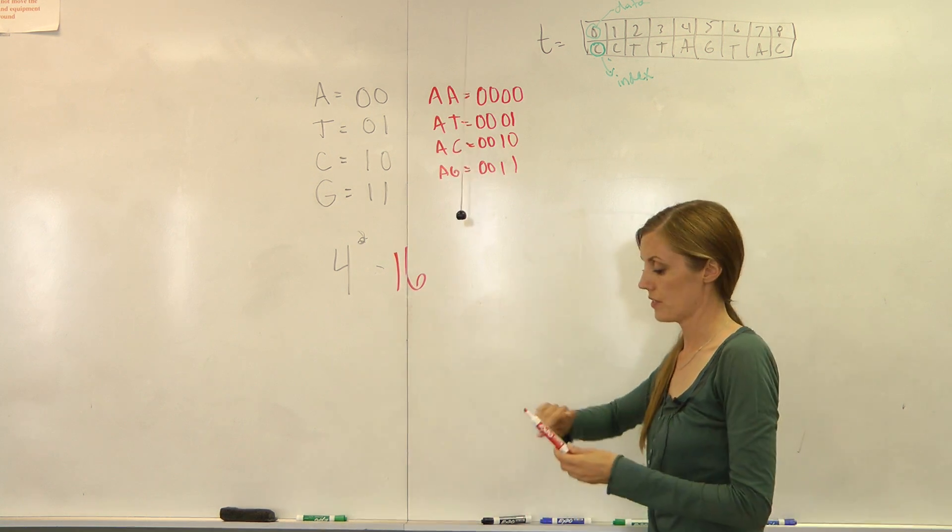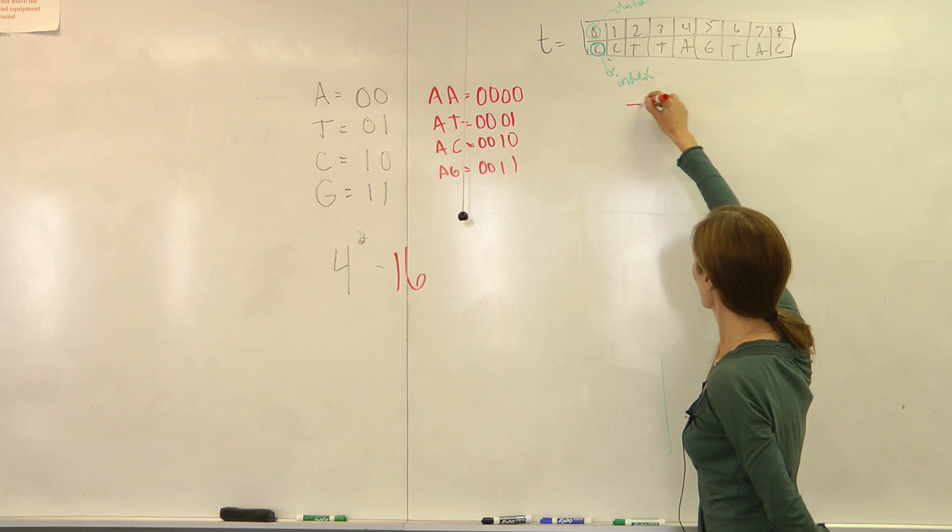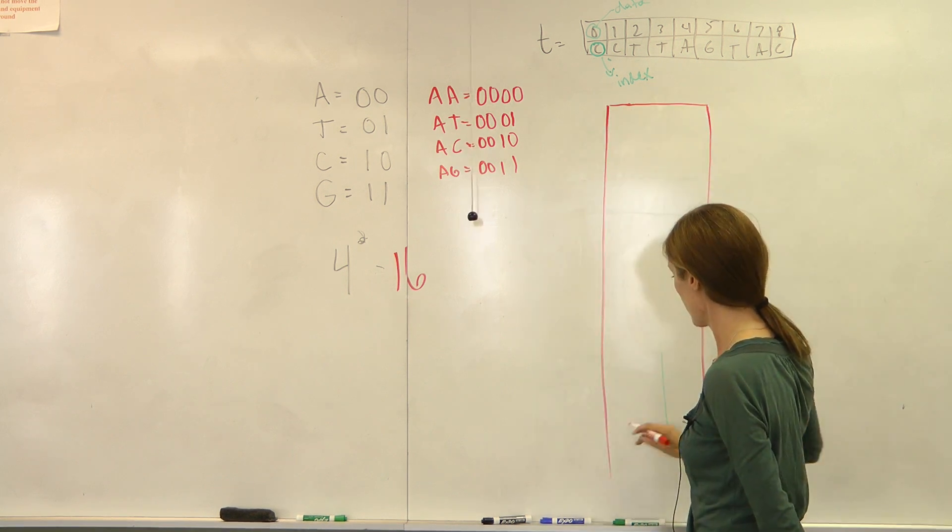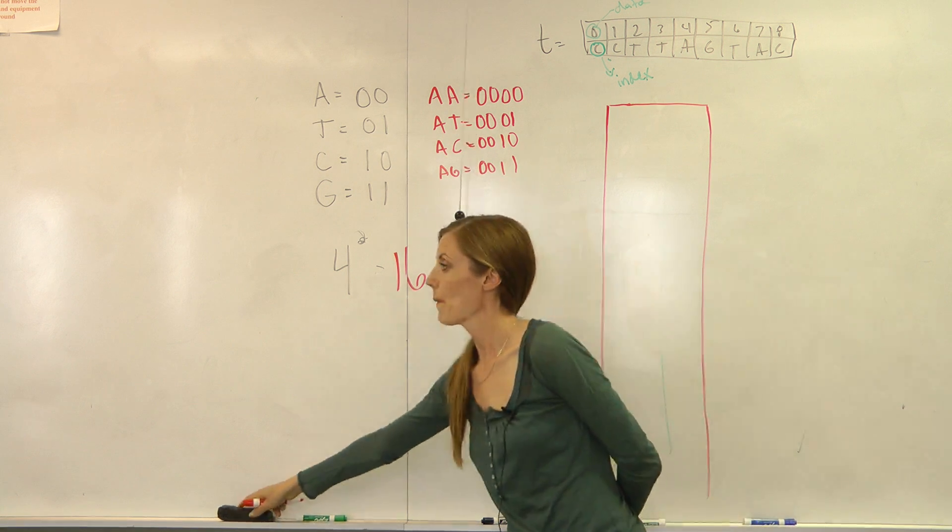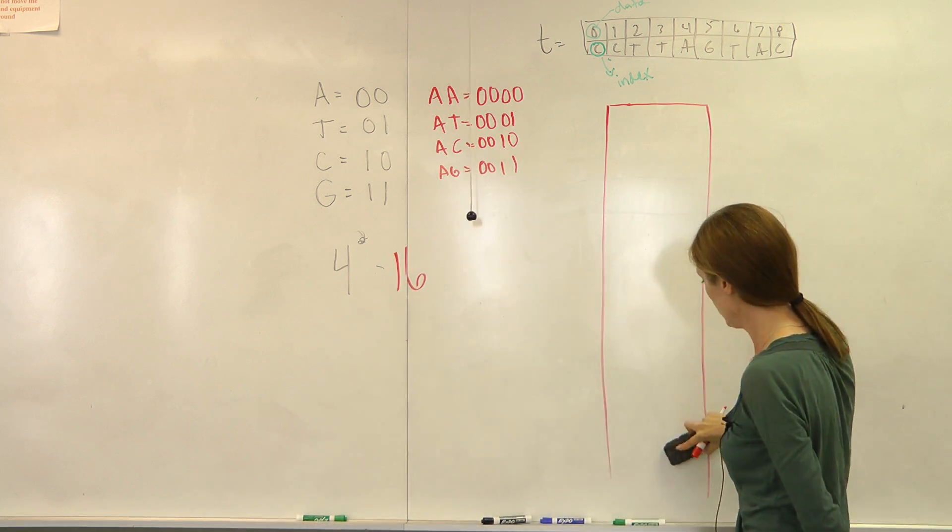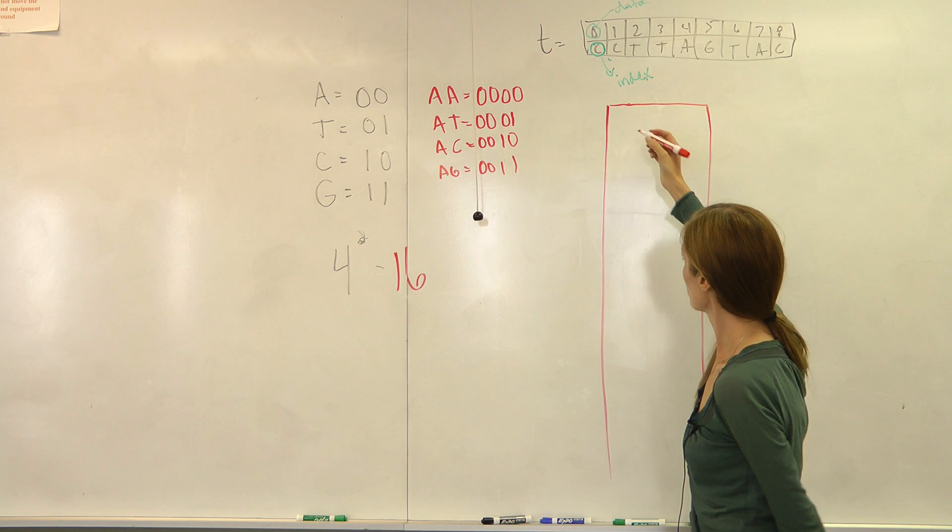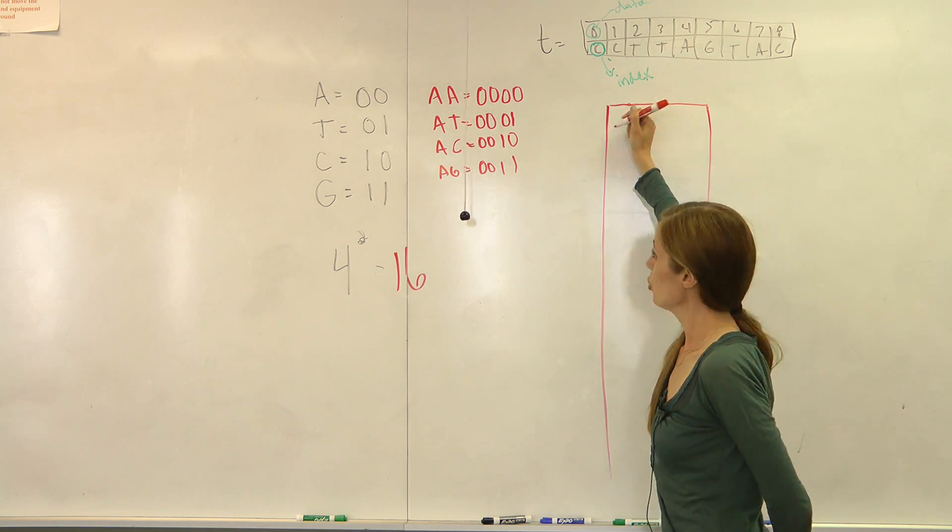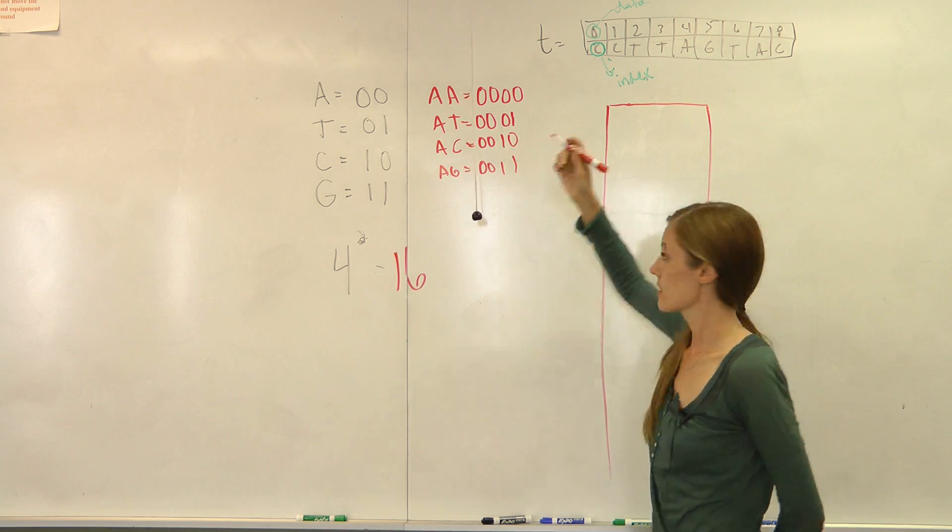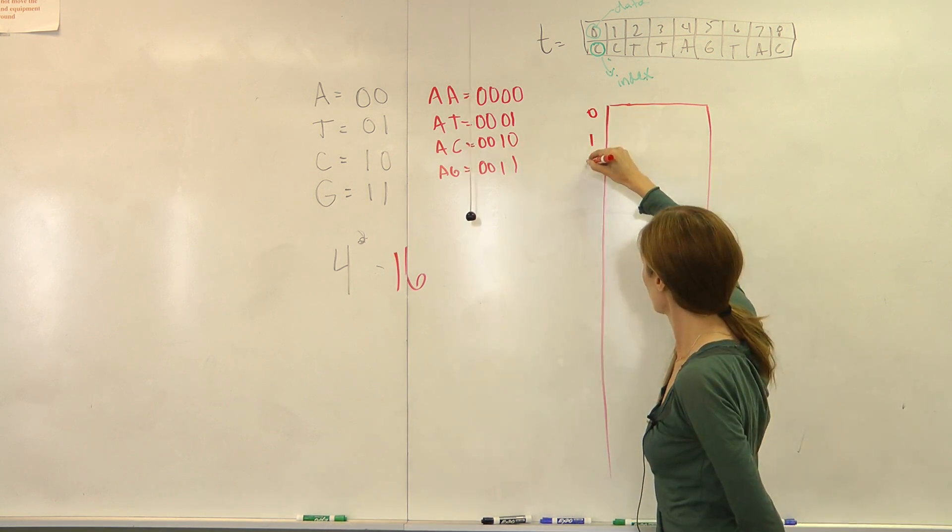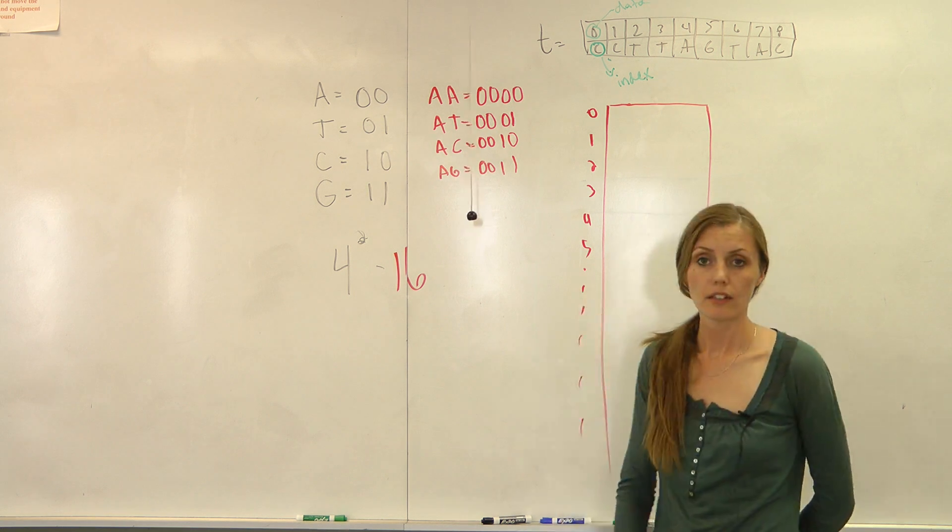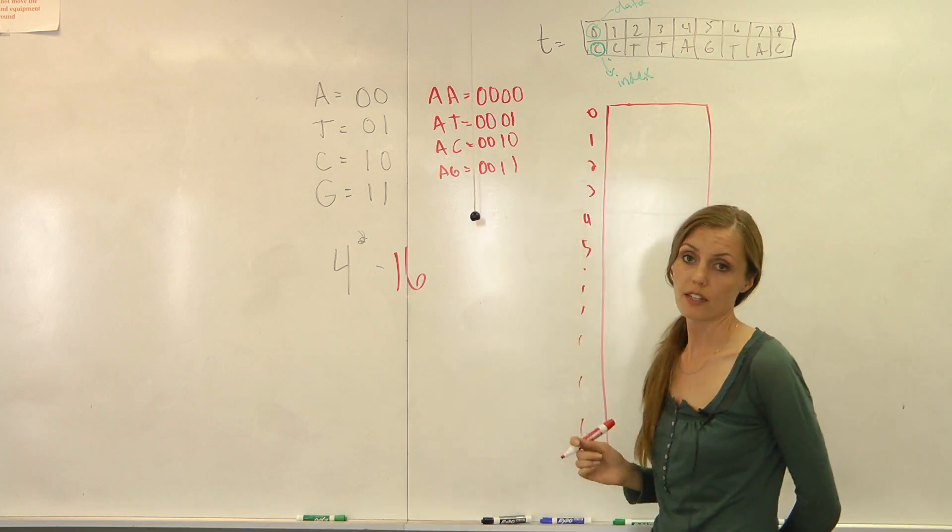We're going to have a total of 16, so your hash table should have the size of 16. And something to remember is that when you have an array, you usually don't set the index. The index exists, right? It's 0, 1, 2, 3, 4, 5, and so on, assuming that it starts with an index of 0.